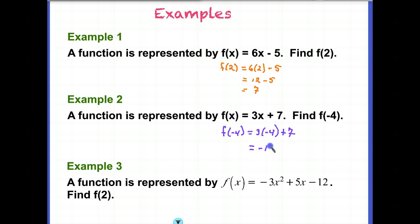3 times -4 is -12 plus 7, and that equals -5. And that's my answer. So basically, in my function, what is the value of my function when x is -4? And that would be -5.